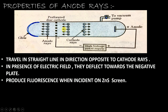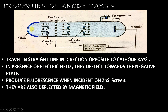The third property is that anode rays produce fluorescence when incident on a zinc sulfate screen. After traveling through the gaps, when they hit the zinc sulfate screen, they produce a glow. The fourth property is that they are also deflected by a magnetic field, which confirms that they carry a certain charge — and we have already proved they carry a positive charge.